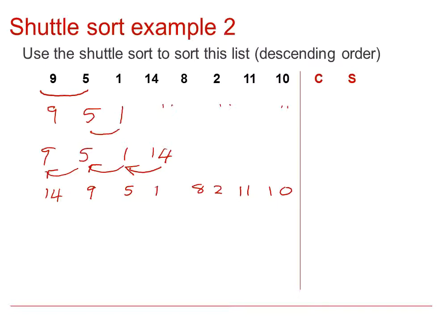In the next pass, we would then be comparing the 8 with the 1, which would change, and the 8 with the 5. But then, when we compare the 8 with the 9, there is no swap, and so the pass ends.